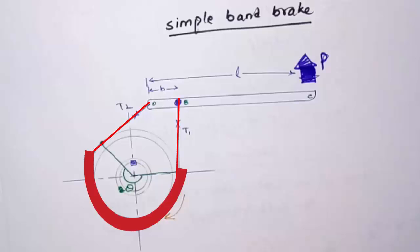This is a band which is connected to the lever. This is shaft on which a wheel is mounted and band is wrapped around the wheel. Wheel and shaft are connected by mean of a key.